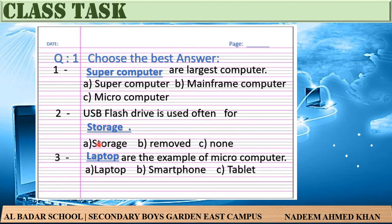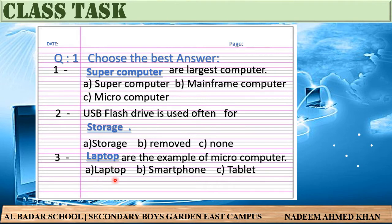Number three — Dash are examples of Microcomputer. Option A: Laptop, Option B: Smartphone, Option C: Tablet. Microcomputer کی مثال کیا ہے؟ یہ بہت آسان ہے پیارے بچوں۔ Answer: Option A — Laptop. This is your answer.